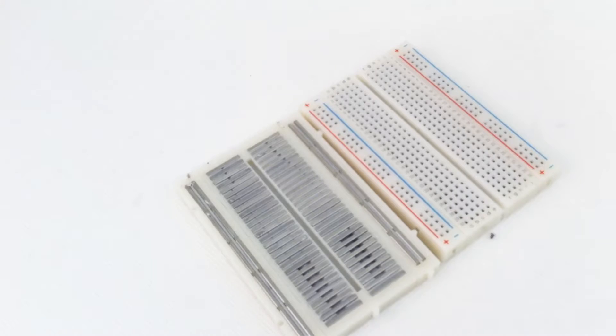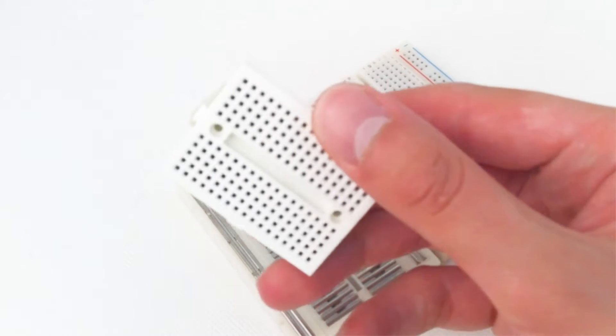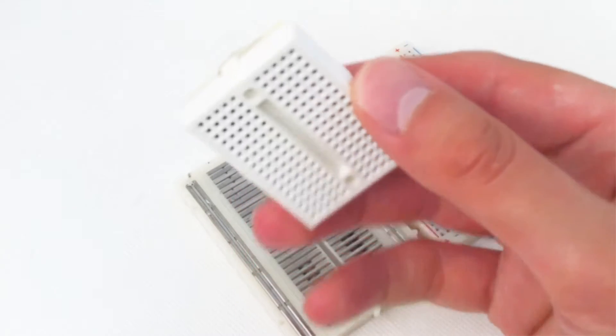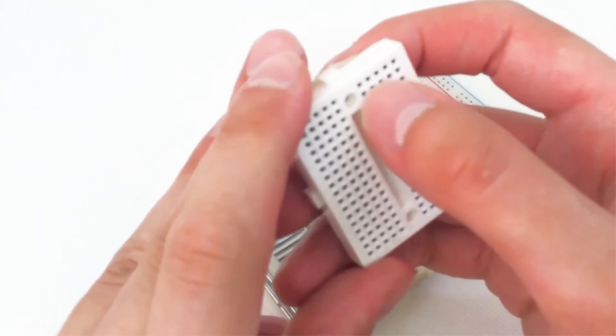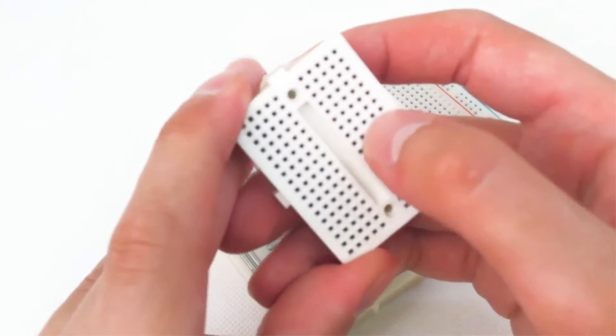Be aware though that some breadboards like this 170 point one don't actually have any power rails in which case it just connects across these sets of five holes.